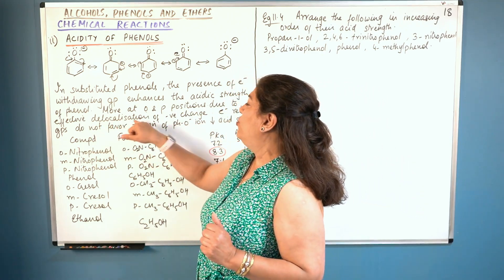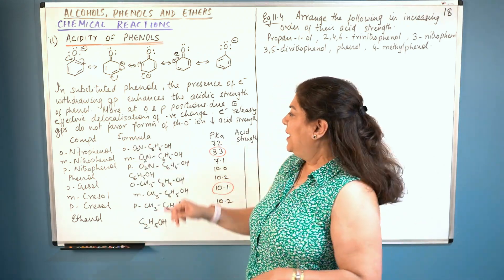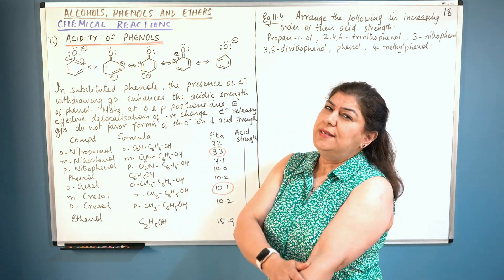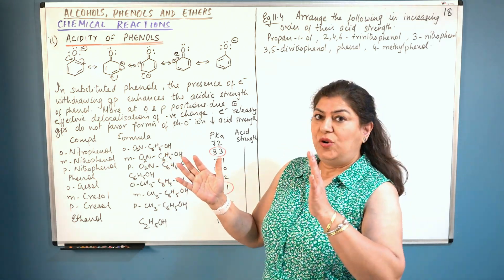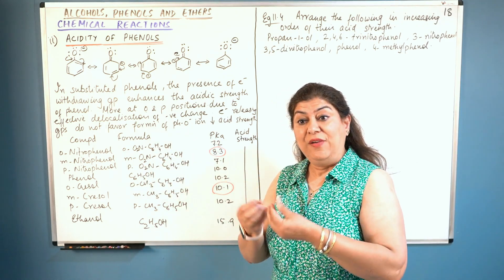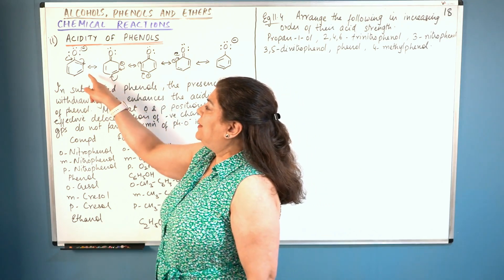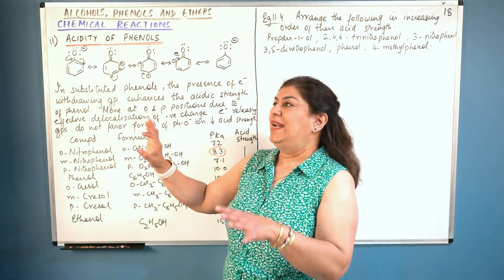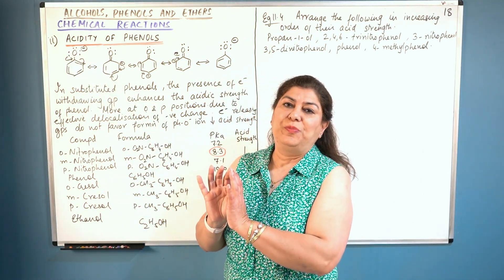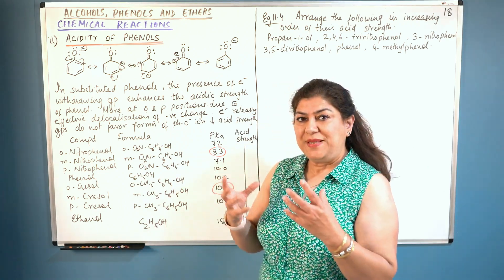Presence of an electron withdrawing group in the benzene ring will help the acidic strength and make the phenol more acidic, but if it is present at the ortho and para position, it will be even more effective due to effective delocalization of the negative charge. Conversely, if you have an electron releasing group — like a methyl or ethyl group, any alkyl group — it pushes electrons away. So electrons which have to come into the ring will be repelled by that group, making the phenol less acidic.